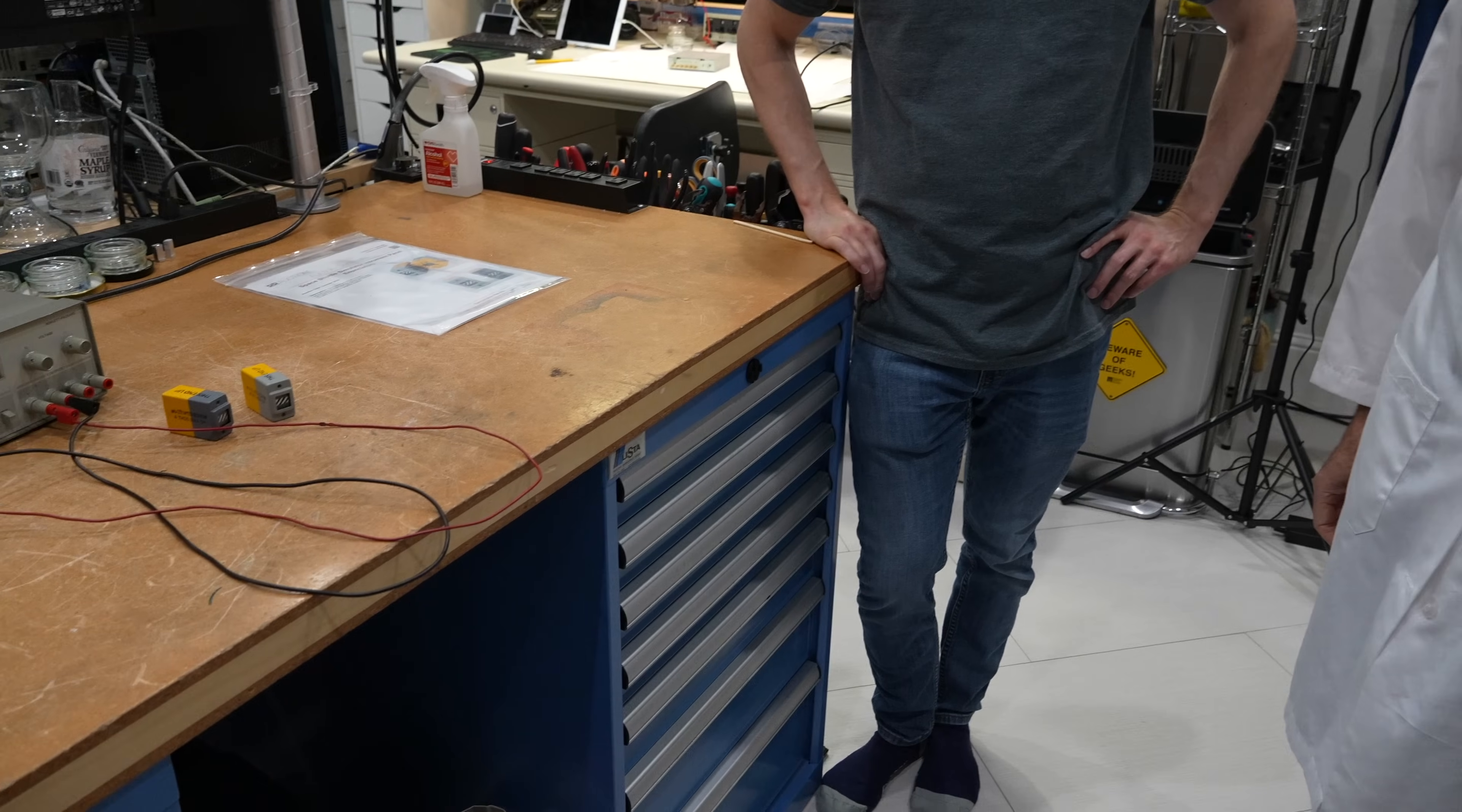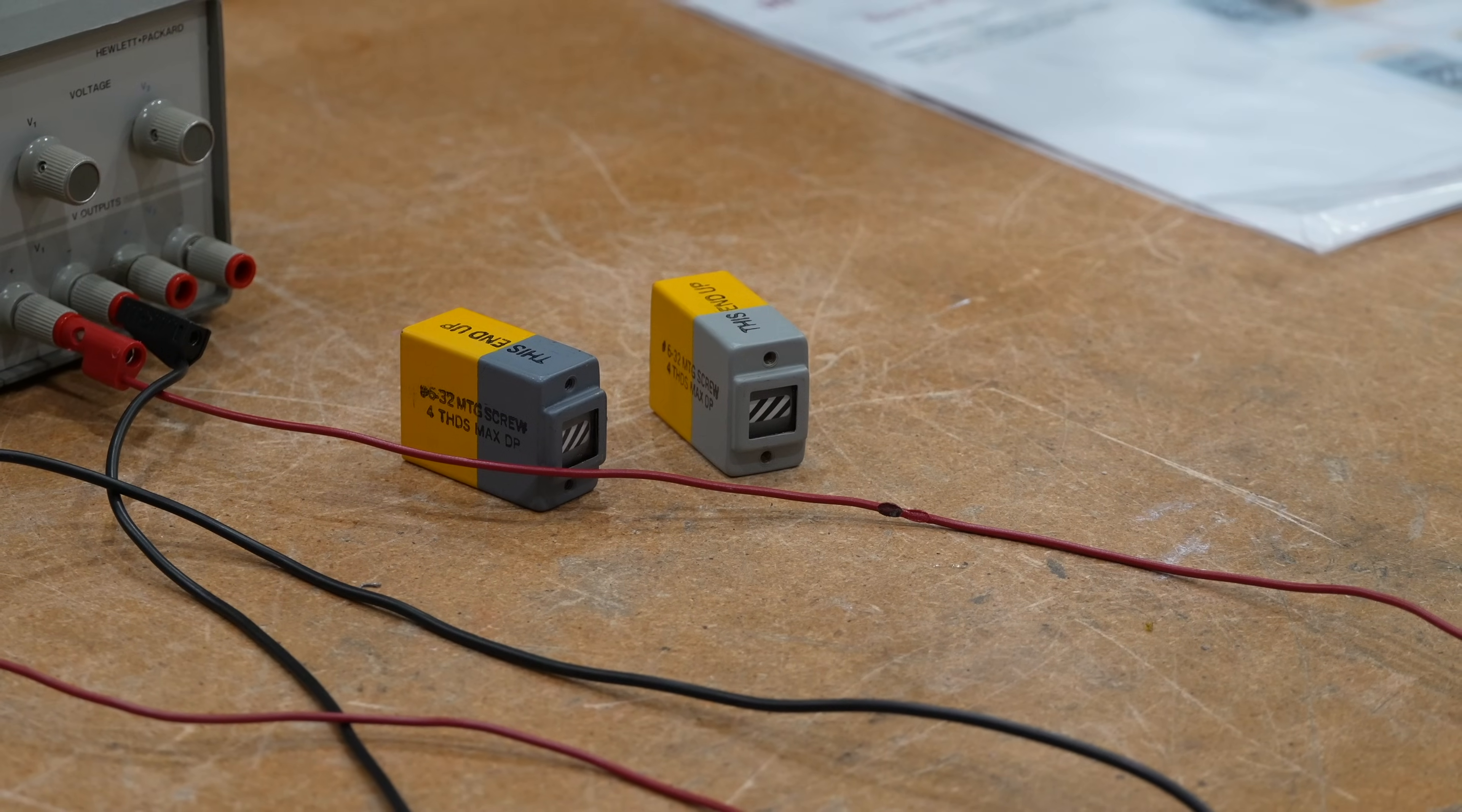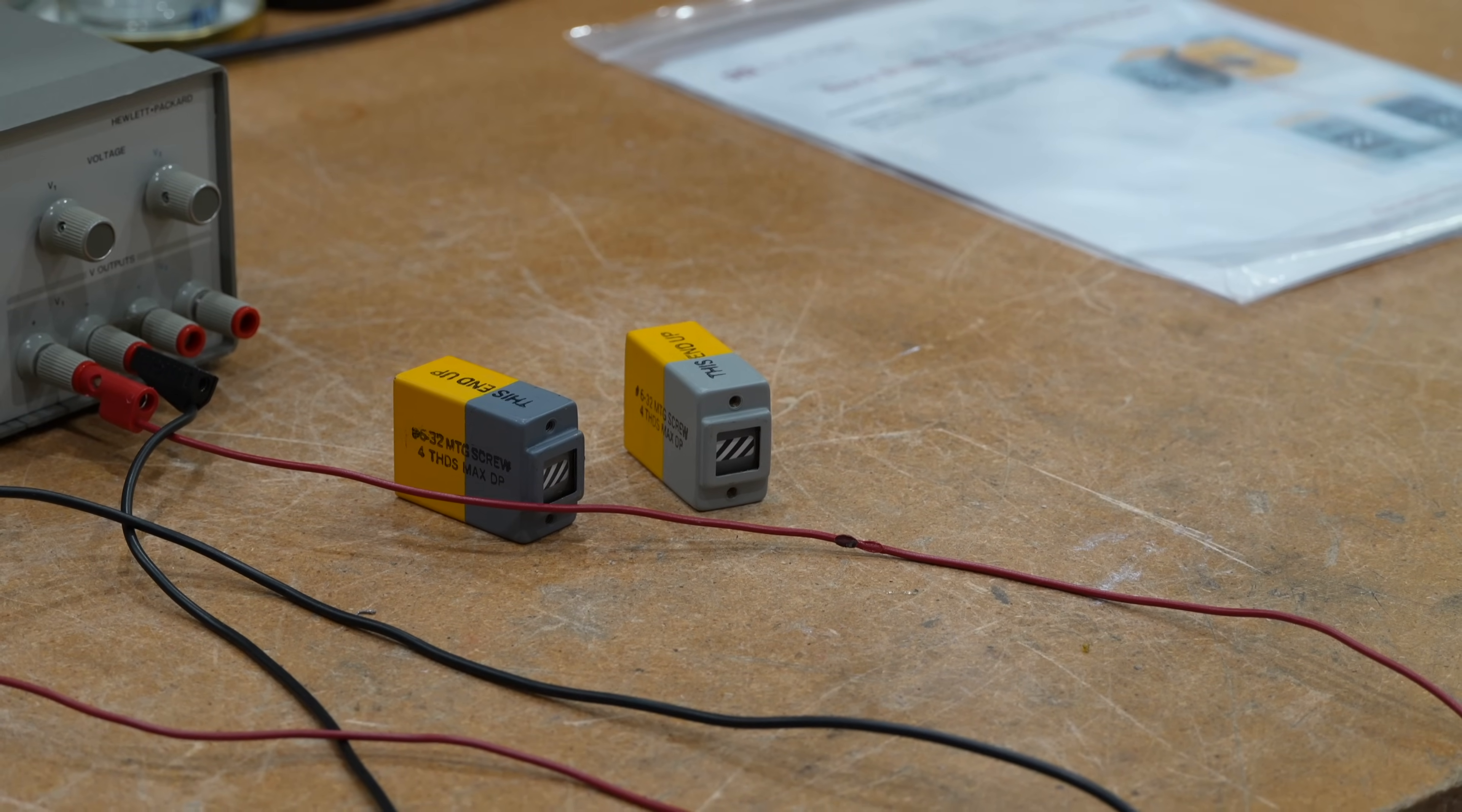So today on the bench, this is my latest acquisition. It's... how do you call that? Barber pole indicator? Enunciator. Enunciator.